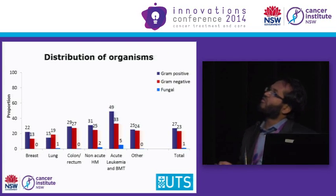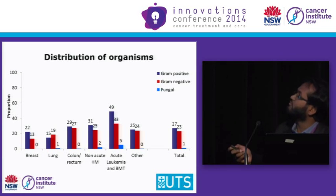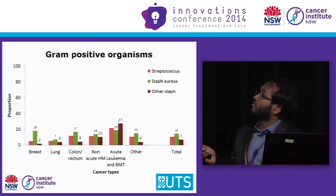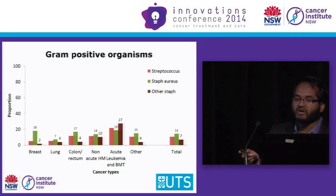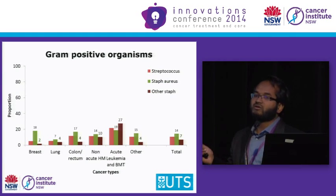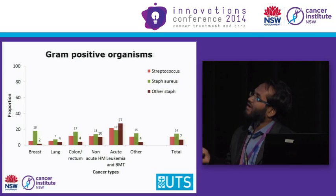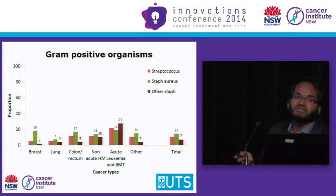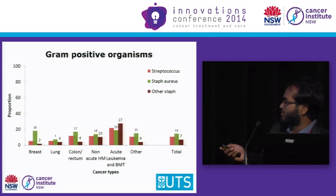In terms of organism profiles, we have a higher rate of gram-positive infections compared to gram-negative infections, and this is consistent across all cancer types. In terms of gram-positive infections, we have a higher rate of Staphylococcus aureus across all cancer types, except in acute leukemia and BMT, where other Staphylococcus species are more prevalent. For gram-negative organisms, E. coli appears to be highly prevalent across all cancer types.